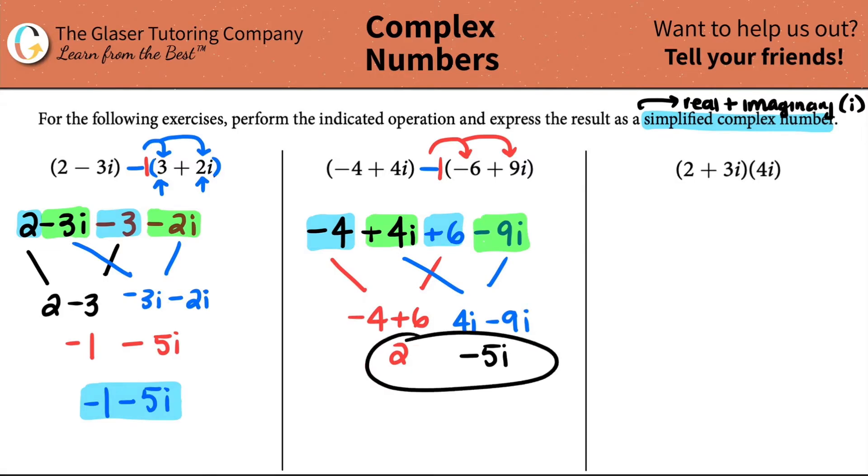Now all we just have to do is clean this up. We put the real numbers in the front. So 2 - 5i. Look at that guys. Pretty simple. Last one.